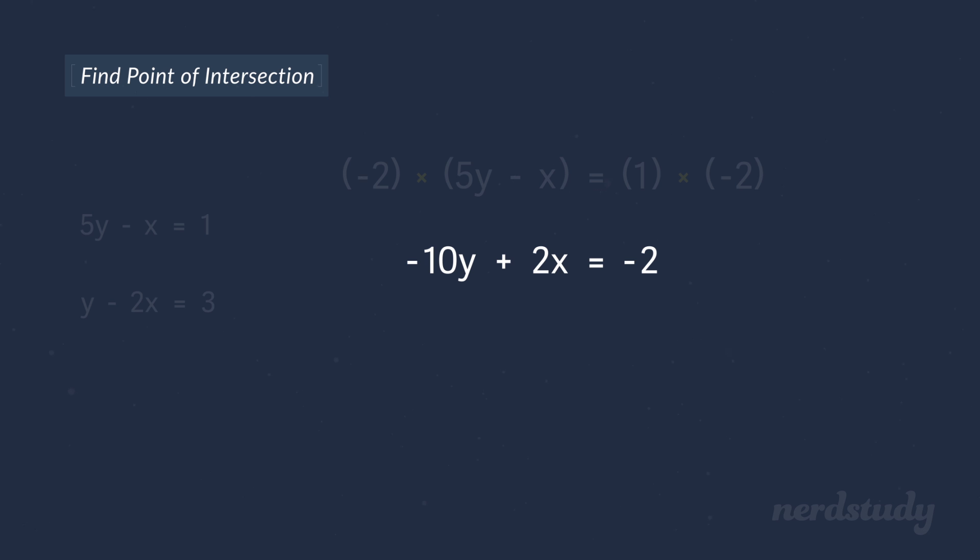So we haven't changed the actual line. If you plot this out on the graph, it will be the exact same as before. What we have done, however, is this. We've set up the equation in a way where all you would have to do is add the two equations together. What you would get is negative 9y equals 1 after eliminating x. Dividing both sides by negative 9 isolates y by giving us y equals negative 1 over 9.